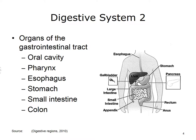The primary organs include the oral cavity, the pharynx, the esophagus, the stomach, the small intestine, and the colon.